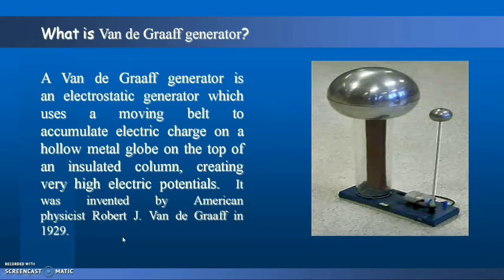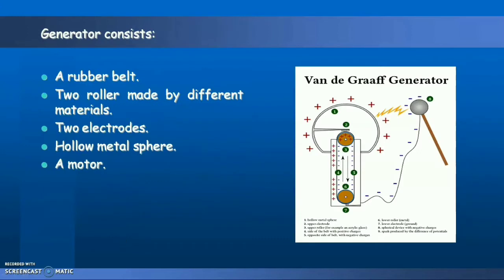So Van de Graaff generator consists of a rubber belt, two rollers made by different materials to serve as electrodes, a hollow metal sphere, a motor that can rotate the roller, and an insulated stand.